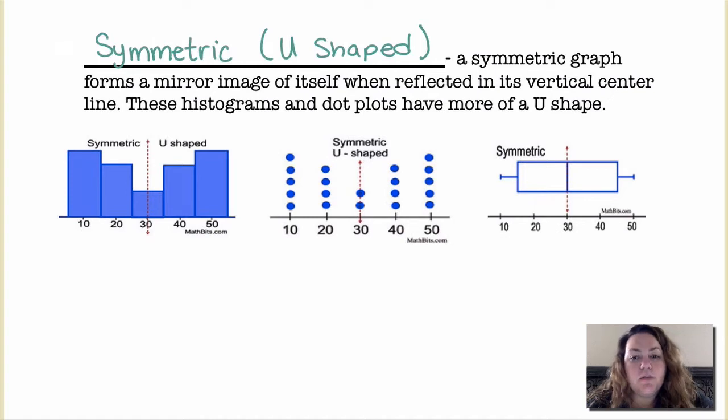A symmetric U-shaped distribution is a symmetric graph that forms a mirror image of itself when reflected over a vertical axis through the center. These histograms and dot plots have more of a U shape. Maybe bimodal also because they have like two peaks.